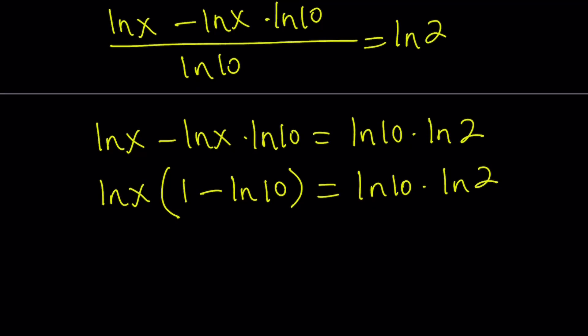And that is equal to ln 10 times ln 2. One thing I want you to notice. ln 2 times ln 10 is positive, but 1 minus ln 10 is negative because ln 10 is greater than 1 because 10 is greater than E, which is the base. Make sense?